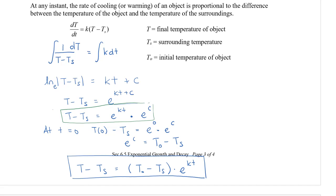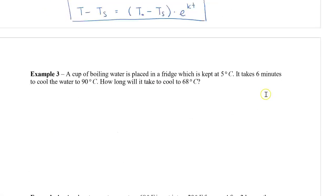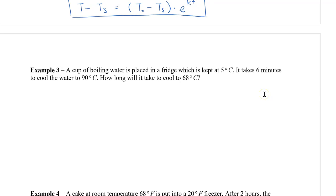Remember, it's going to be the final temperature minus the surrounding temperature and is equal to the initial temperature minus the surrounding temperature times e to the power of kt. Let's take a look at one example to see how this works. A cup of boiling water is placed in a fridge which is kept at 5 degrees Celsius. It takes 6 minutes to cool the water to 90 degrees. How long will it take to cool to 68 degrees?